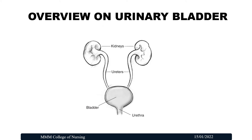Before we see the care of patients with suprapubic catheter, let us have an overview on urinary bladder. The urinary bladder is a hollow organ made up of muscle, designed to store and evacuate urine from the human body. A typical urinary bladder holds between 300 and 500 ml of urine. The bladder is divided into fundus, body, apex, and neck. It is located just behind the pubic bone in the extraperitoneal space. The abdominal muscle just above the pubis is comprised of the rectus muscle, the lateral muscles, and the linea alba in the midline. The suprapubic catheter is inserted through this rectus muscle.